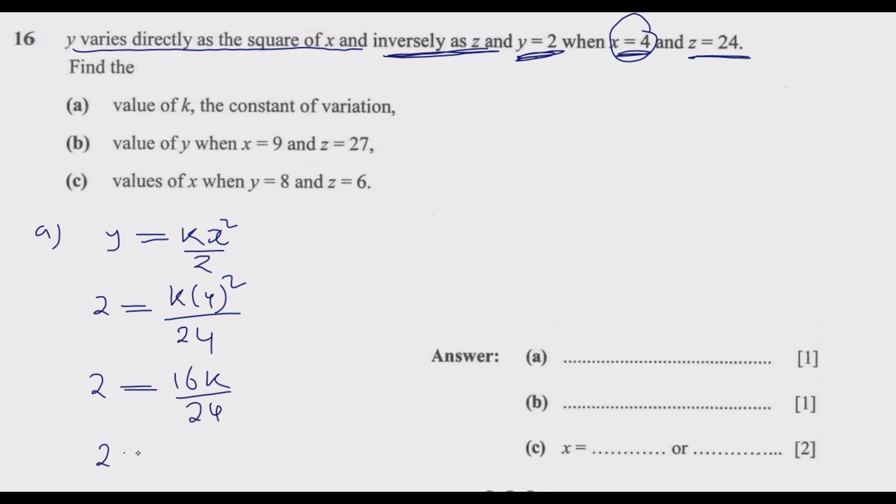So we can simplify this by dividing. 4 into 16 is 4, 4 into 24 is 6. Then 2 into 4 is 2, 2 into 6 is 3. So what we get is basically 2K over 3.